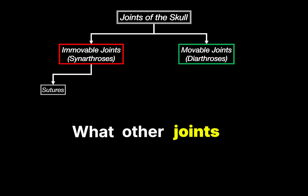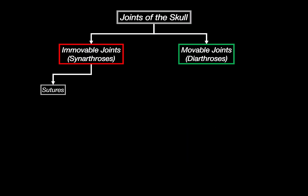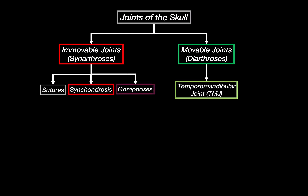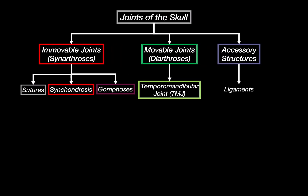So what other joints can we find in the adult skull? Besides sutures, we've got two more types of synarthrosis: synchondrosis and gomphosis. And we have one movable joint, the temporomandibular joint, or TMJ, which is a synovial joint — the only freely movable joint in the skull. We also have ligaments, which aren't joints themselves, but important supporting structures that reinforce and stabilize the joints around the skull.